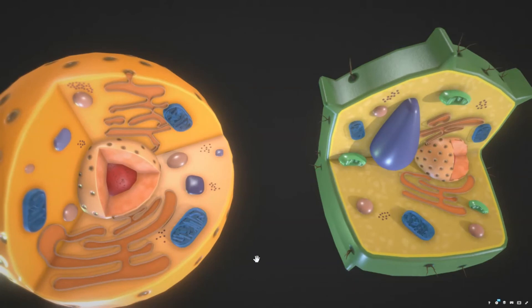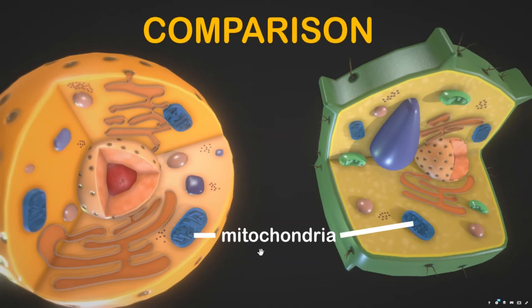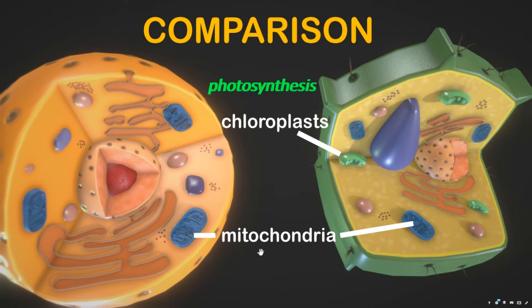Both animal and plant cells have mitochondria, but only plant cells have chloroplasts. Plants don't get their sugar from eating food, so they need to make sugar with the help of sunlight. This process, known as photosynthesis, takes place in the chloroplast. Once the sugar is made, it is then broken down by the mitochondria to make energy for the cell.